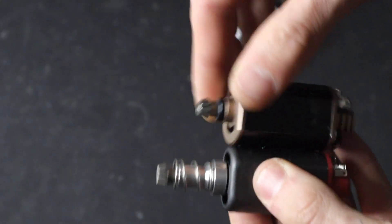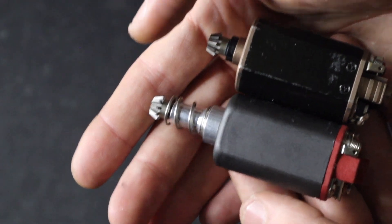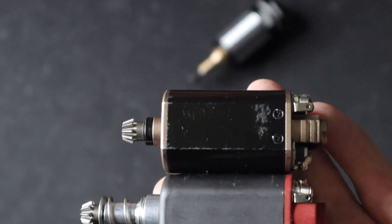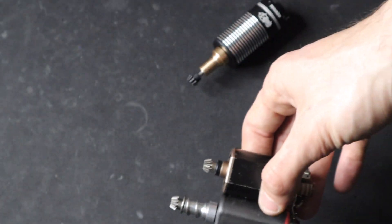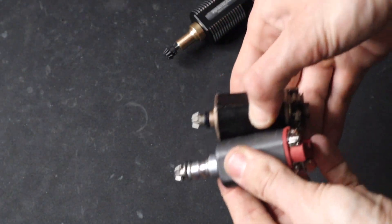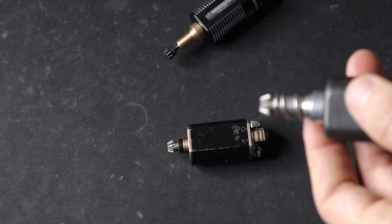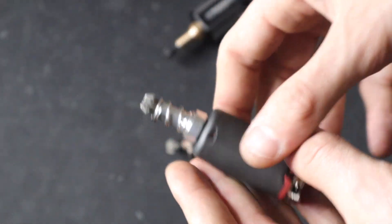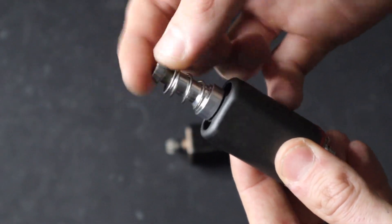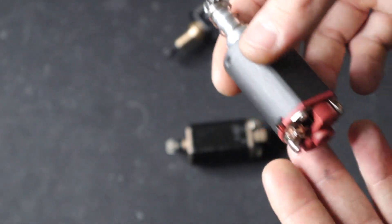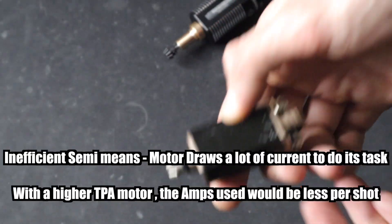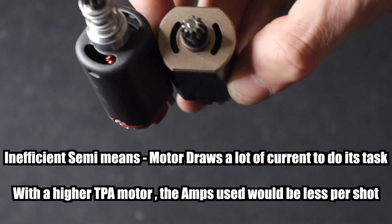A lower TPA motor like this has almost no resistance. It'll have a super high rate of fire, but it'll have a very inefficient semi. That's the downside, and that's how brushed motors basically work.